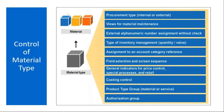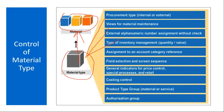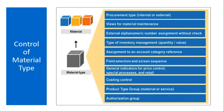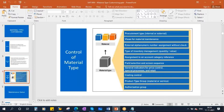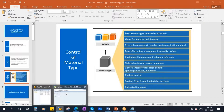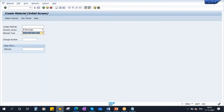Basically, whenever we create a material, we assign a material type and this material type will control all these functions. We will discuss the most important ones. So now, first let me show you the material type configuration. Let me go to configuration.